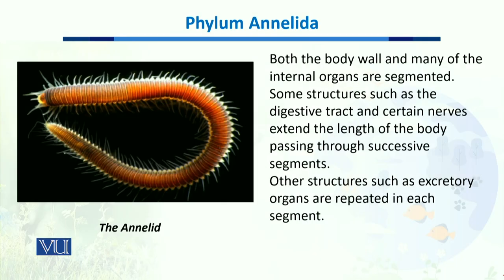As you can see here, this typical annelid body is composed of different segments. These segments could be more than 100 in number, and they make up the body of organisms in phylum Annelida.